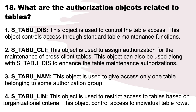What are the authorization objects related to tables? Number 1: S_TABU_DIS. This object is used to control table access through standard table maintenance functions. Number 2: S_TABU_CLI. This object is used to assign authorization for the maintenance of cross-client tables. This object can also be used along with S_TABU_DIS to enhance table maintenance authorizations.